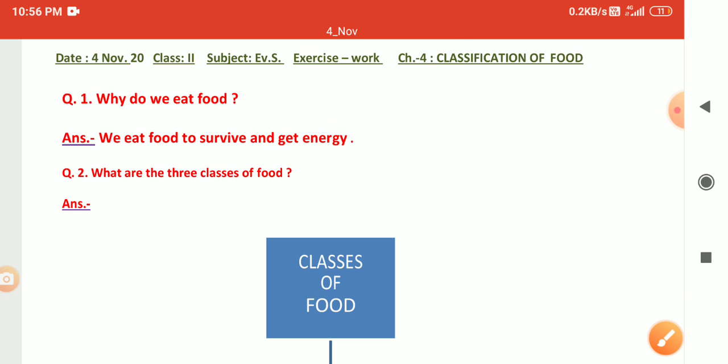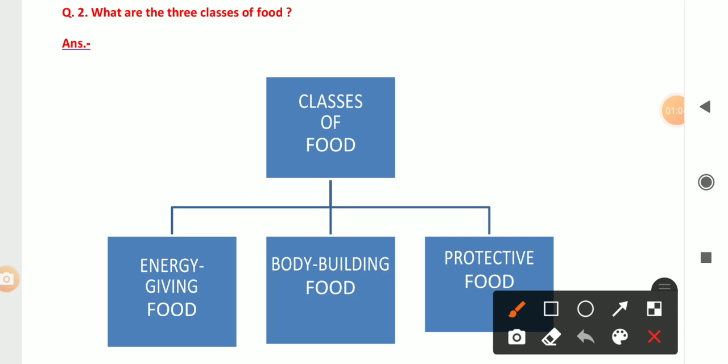Now next is, what are three classes of food? We keep our food in three groups. Classes of food, number one, that is energy giving food, which gives us energy, like potatoes, rice, wheat, sugar. So this is energy.